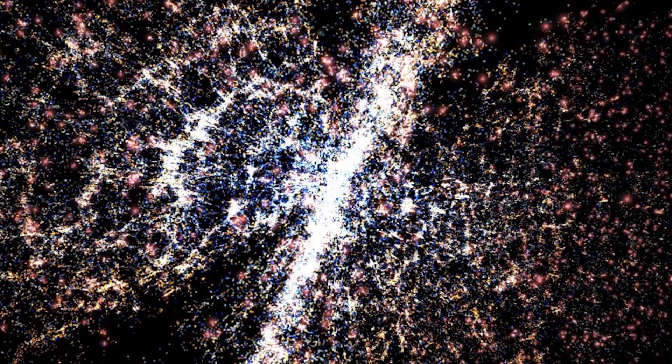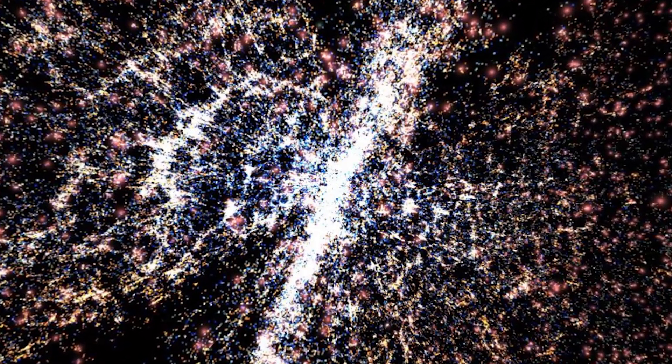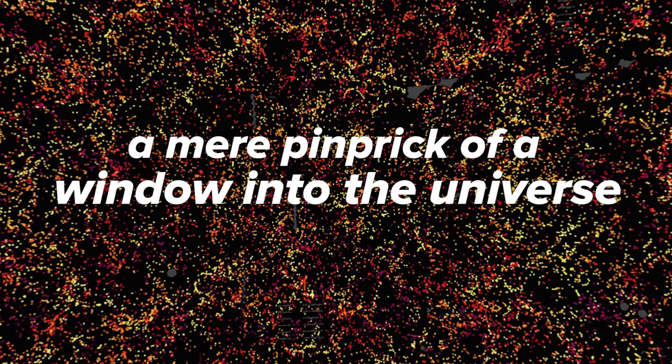This catalog covers way more distance than the Gaia mission, but the trade-off is that it's much less detailed. It charts a total of 1.2 million galaxies in three different dimensions. You're looking at one-twentieth of the night sky here, what Vox described as a mere pinprick of a window into the universe.